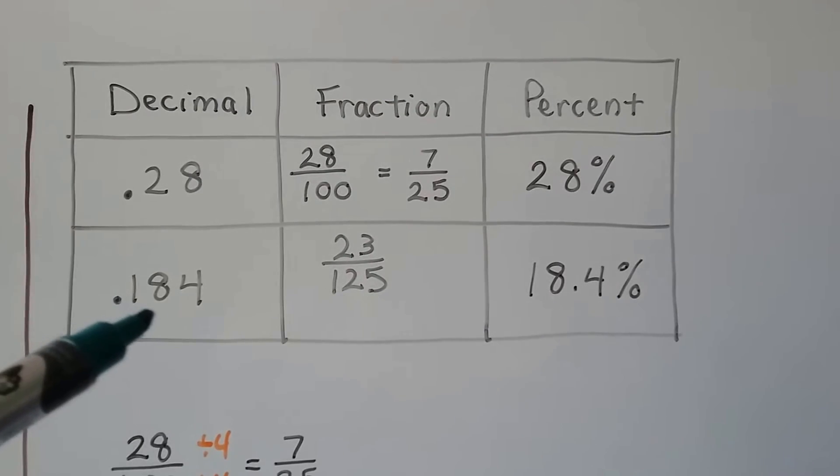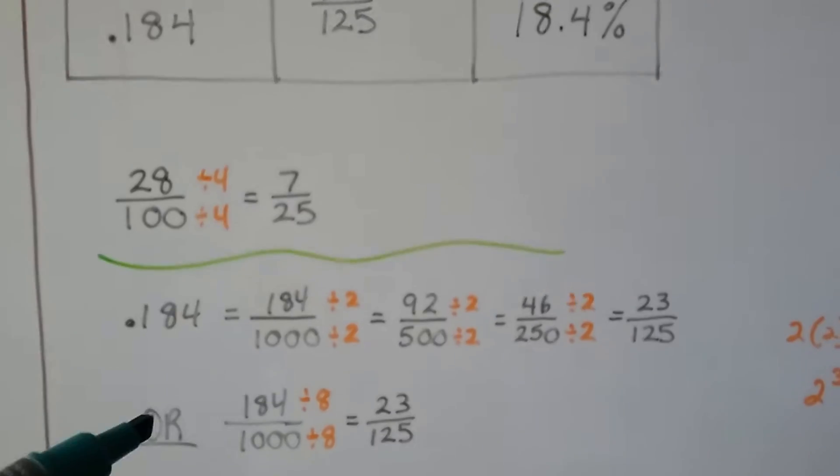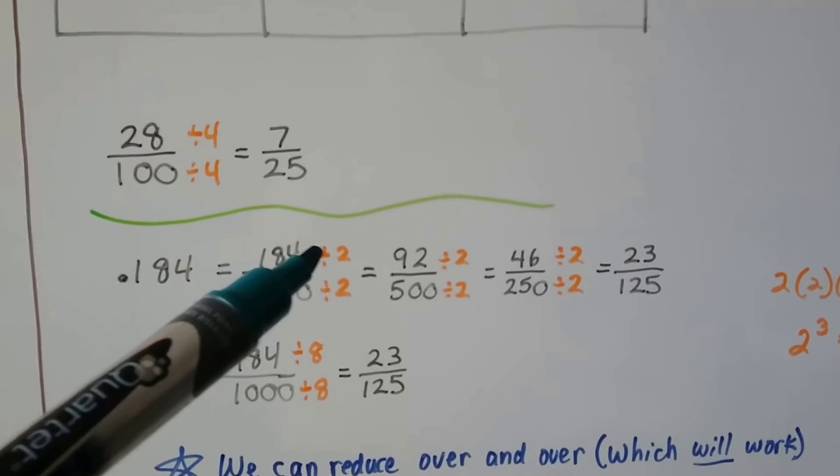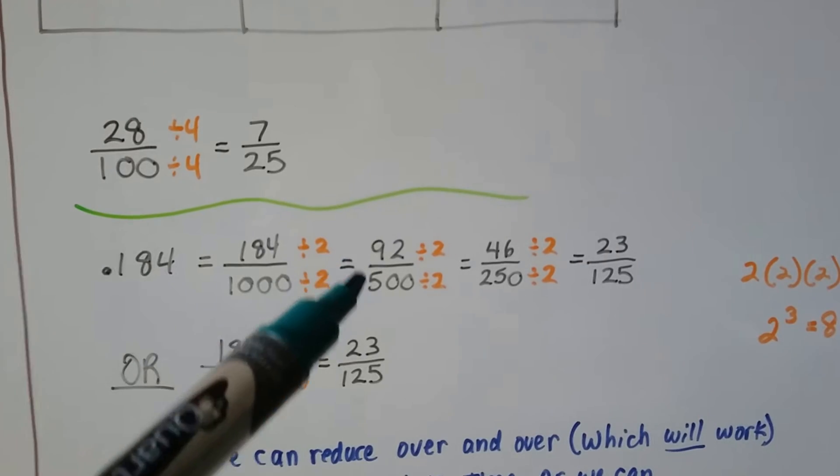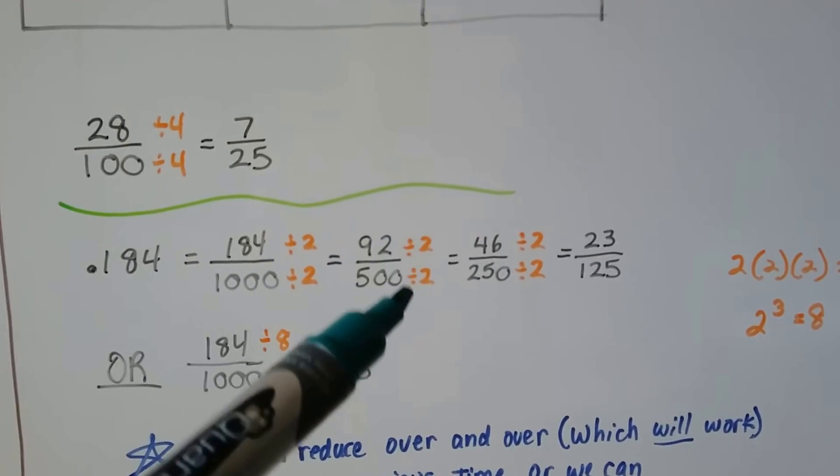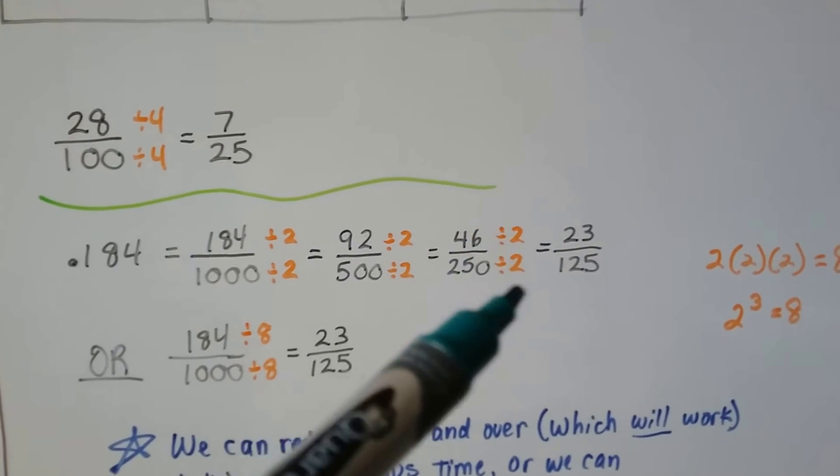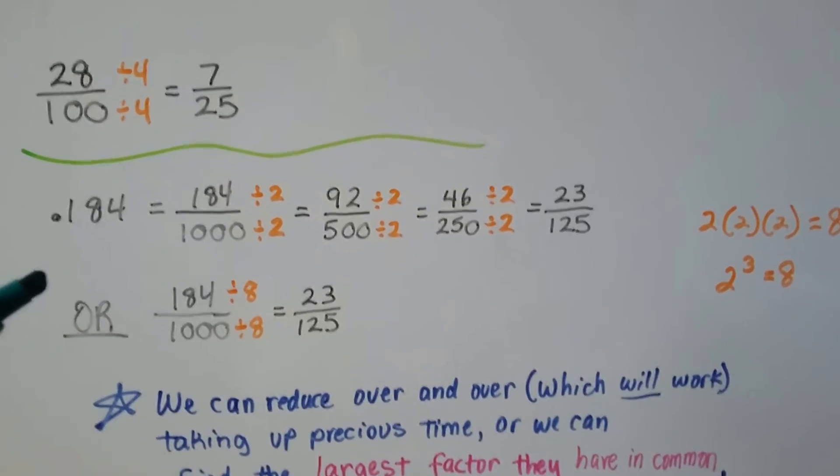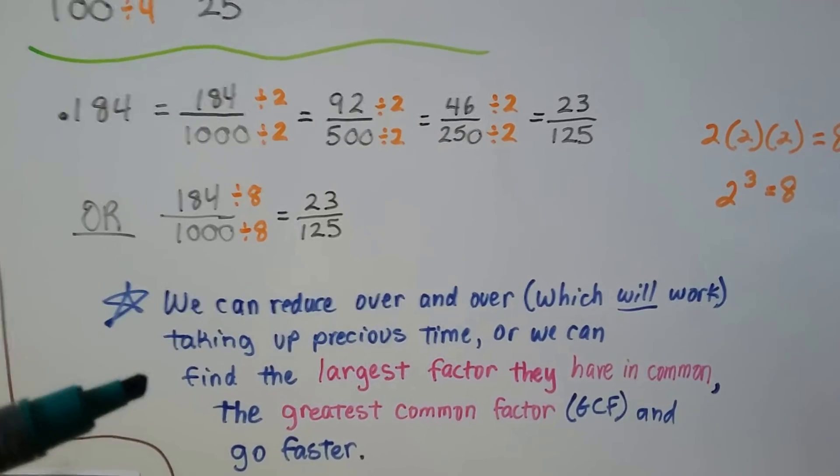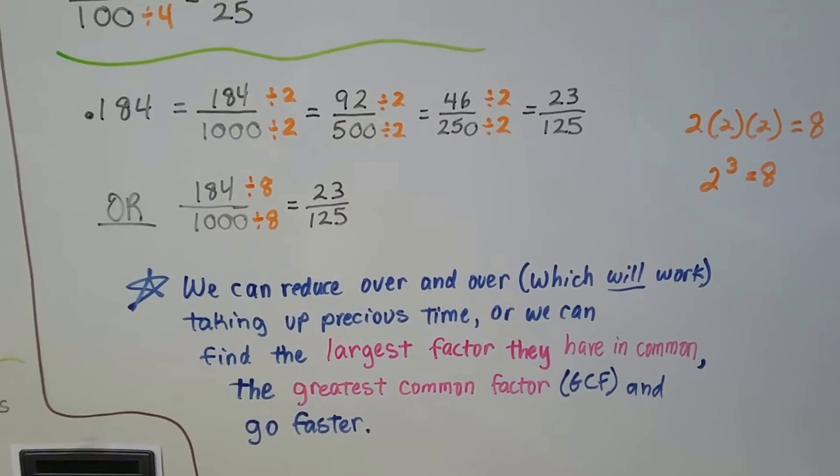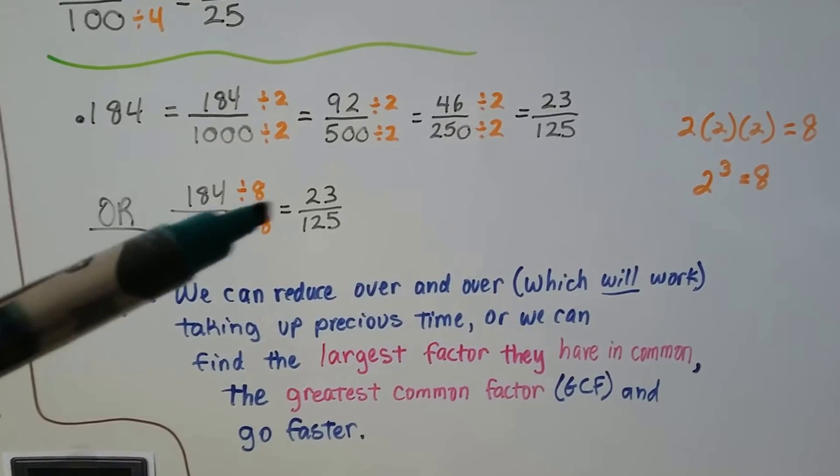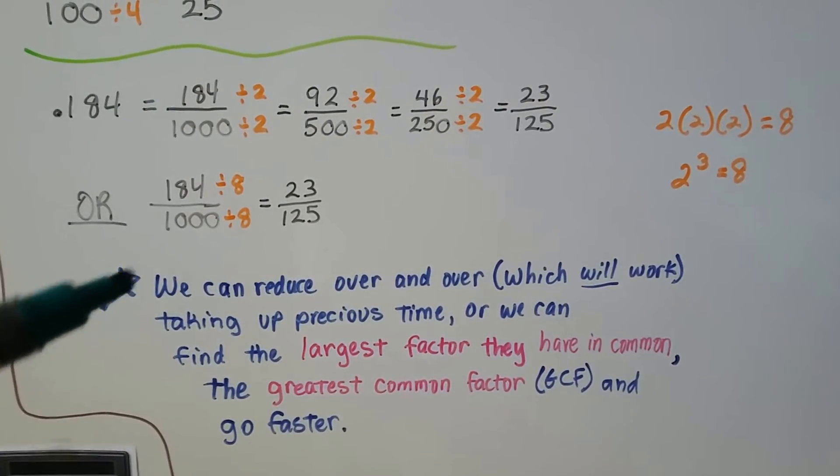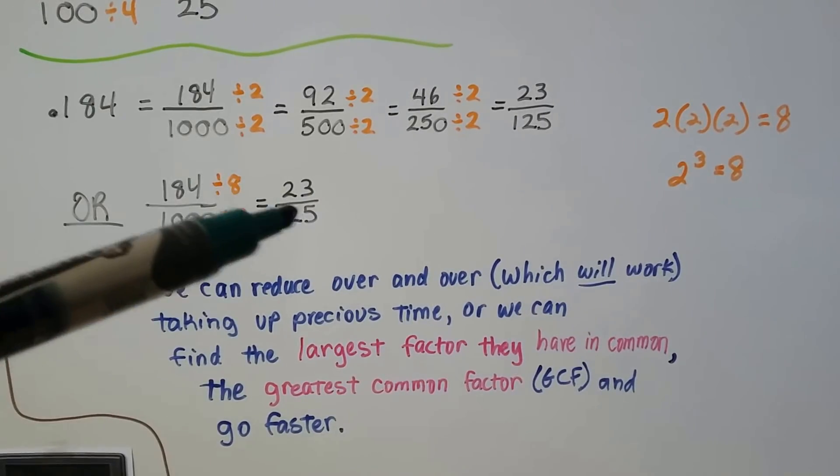For 0.184, this is 184 thousandths. We're writing it as a fraction 184 over 1000, and we can divide the numerator by 2 and the denominator by 2 and get 92 five hundredths, and then divide both of them by 2 and get 46 over 250, then divide them by 2 and get 23 over 125, or we could just find the largest number.